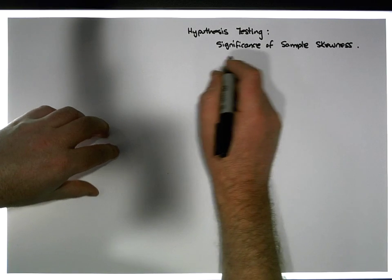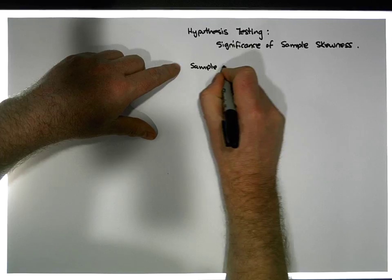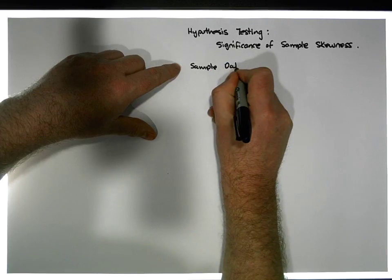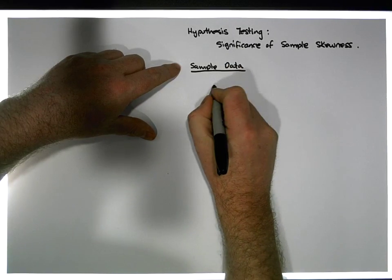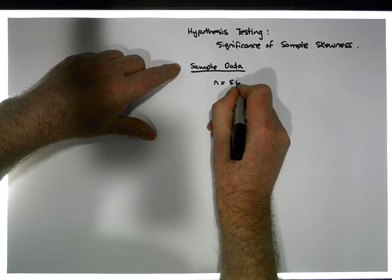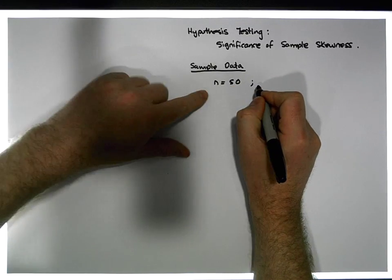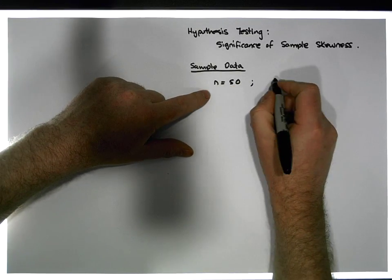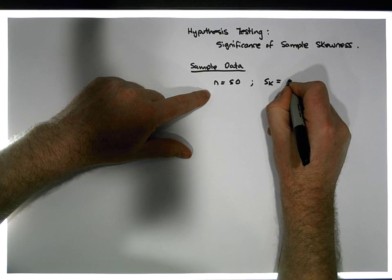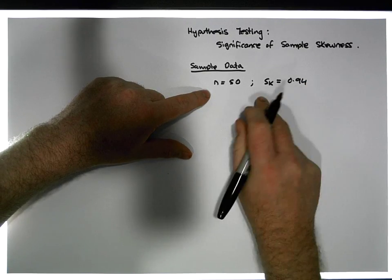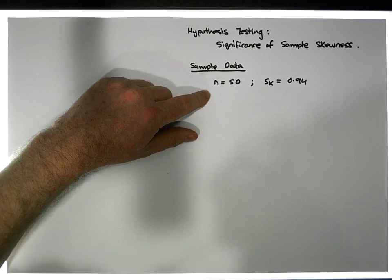The sample data we're going to be using has a sample size of 50 — that's what we had in our group frequency distribution — and the value for the skewness sk is equal to 0.94.